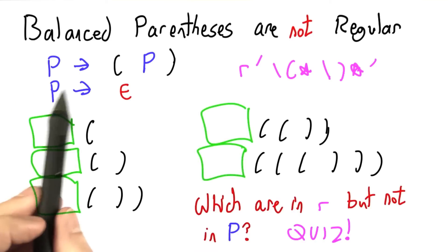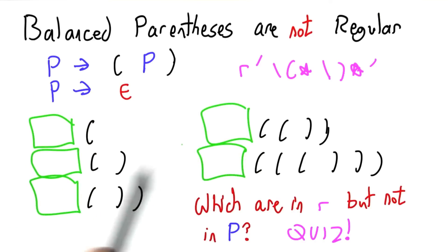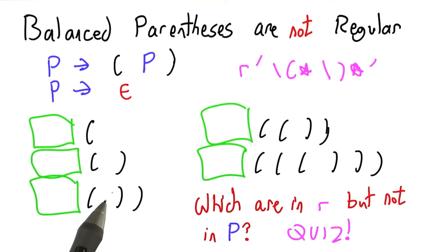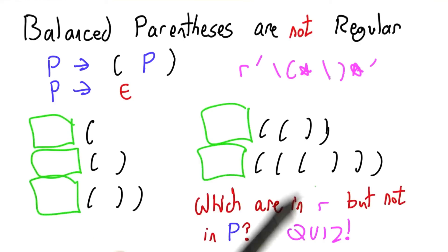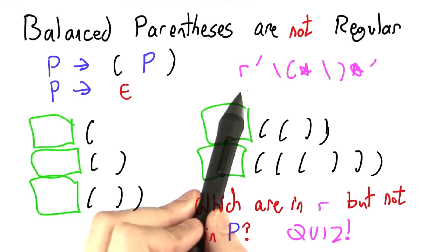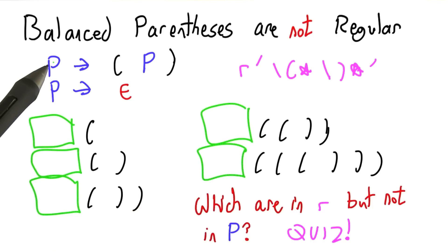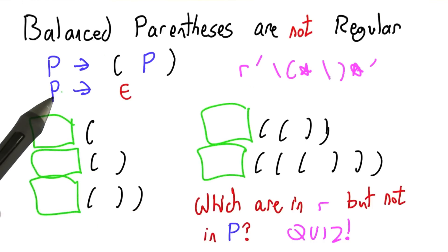In this multiple choice quiz, I'd like you to tell me for these five strings, for these five utterances, which ones are in R, the regular expression, but not in P, the grammar for parentheses. Think about it.